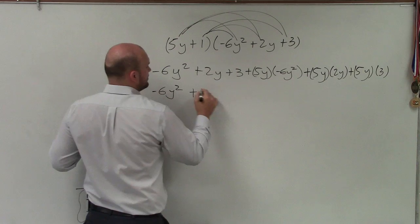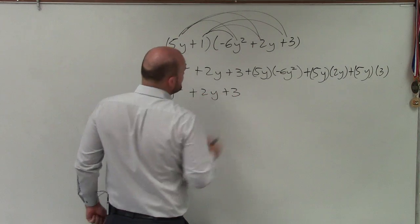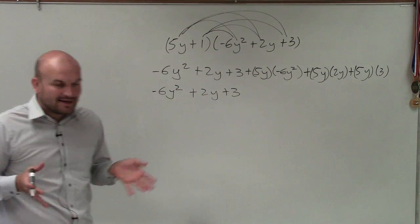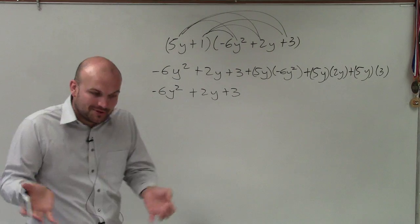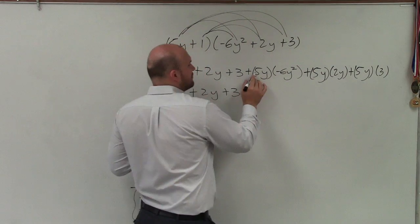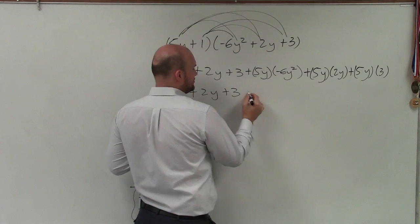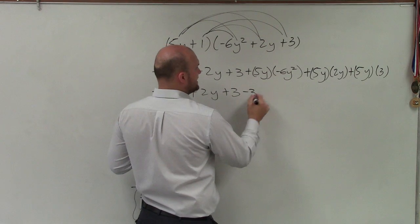So negative 6y squared plus 2y plus 3. And obviously, you could simplify this. You could probably do those in your head. But I'm writing them out to hopefully help you not make those mistakes in your head. So positive 5 times negative 6 is going to be a negative 30.